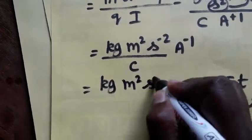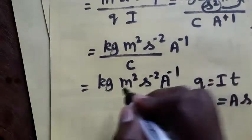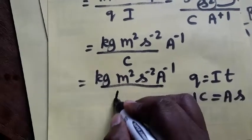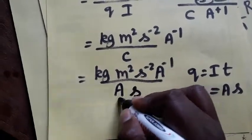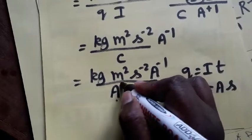So the same formula kg, meter square, second minus 2, ampere inverse, so coulombs, instead of coulombs I wrote as an ampere second. I am taking this two as a numerator, the power plus 1, plus 1 going to be a minus 1.